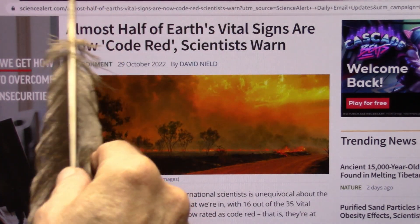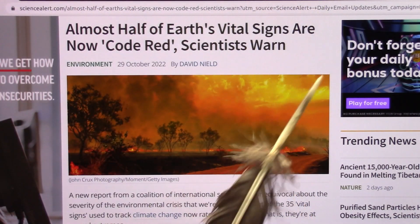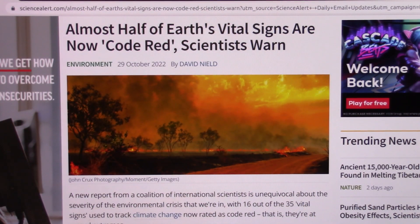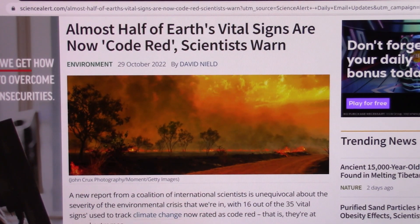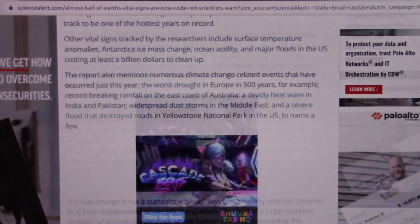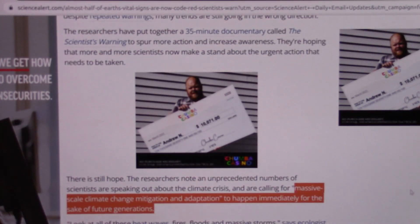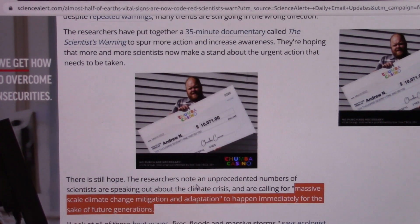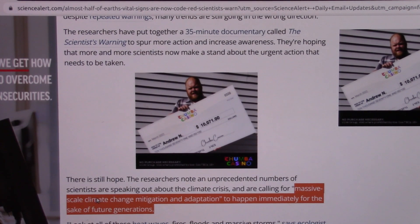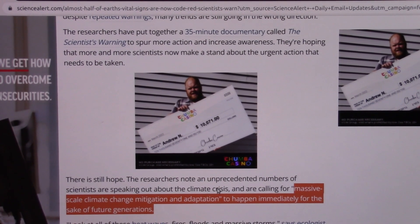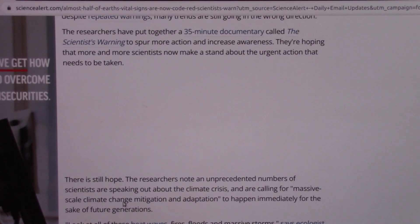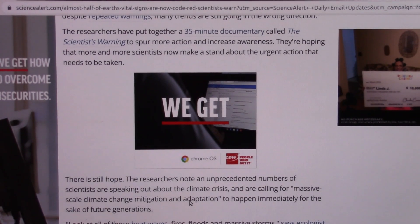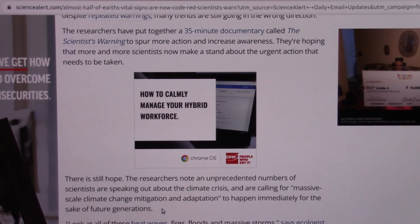Half of the vital signs, and I mean the most important half, are just totally destroyed. They are going at a rate that is just unsustainable, so badly unsustainable that it could happen momentarily. The researchers note an unprecedented number of scientists are speaking out about the climate crisis and calling for massive-scale climate change mitigation and adaptation to happen immediately.